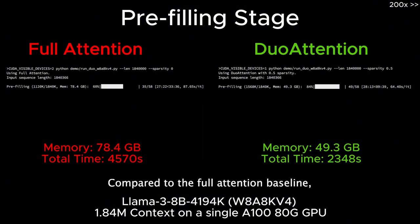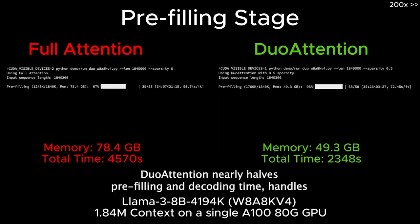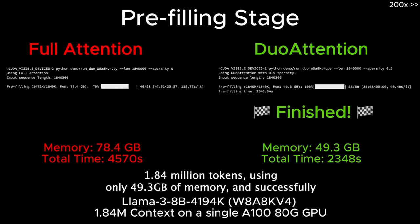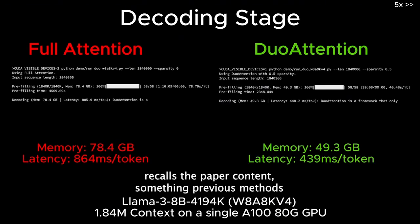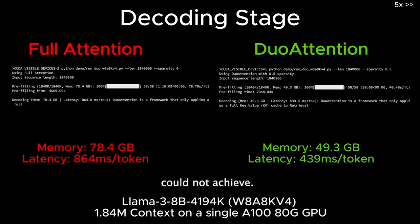Compared to the full-attention baseline, Duo Attention nearly halves prefilling and decoding time, handles 1.84 million tokens using only 49.3 gigabytes of memory, and successfully recalls the paper content — something previous methods could not achieve.